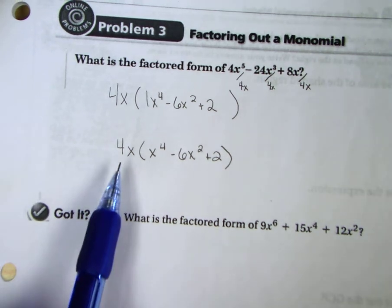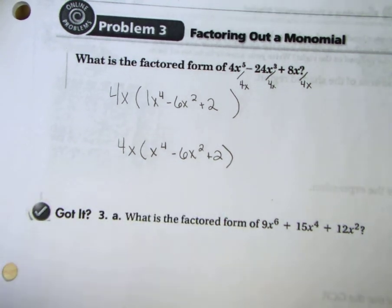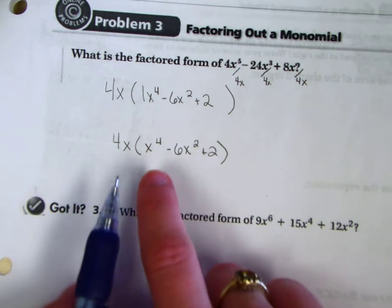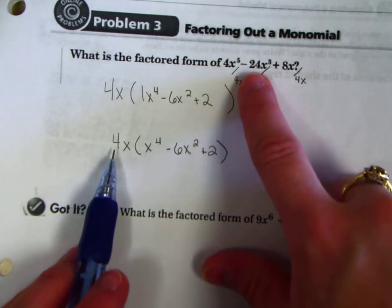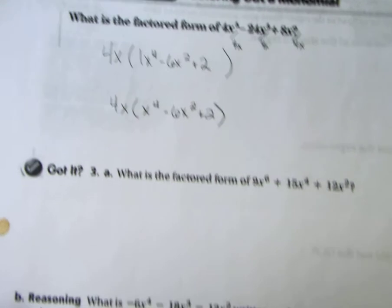Now, if you want to check, just distribute this back in and follow what we did in problem 1. That would become the exact same thing we had originally. Let's try the Got It.